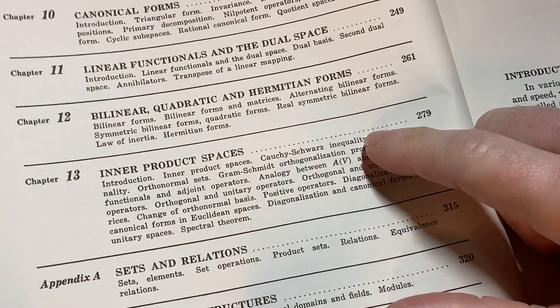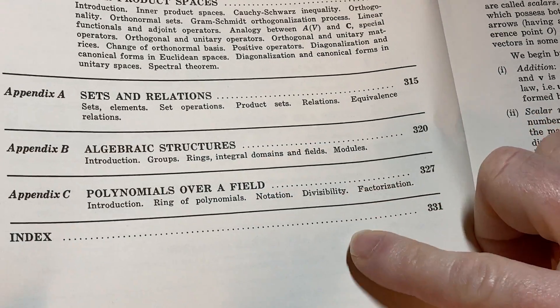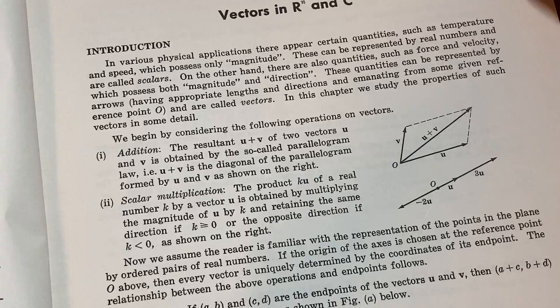Bilinear, quadratic and Hermitian forms, inner product spaces, sets and relations, algebraic structures, polynomials over a field.